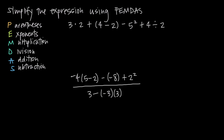In this video we're talking about order of operations, or PEMDAS. PEMDAS is just an acronym that we use to remember the order of operations — in what order do we do our arithmetic. PEMDAS stands for parentheses, exponents, multiplication, division, addition, subtraction. This is our order of operations, starting at the top and moving to the bottom.